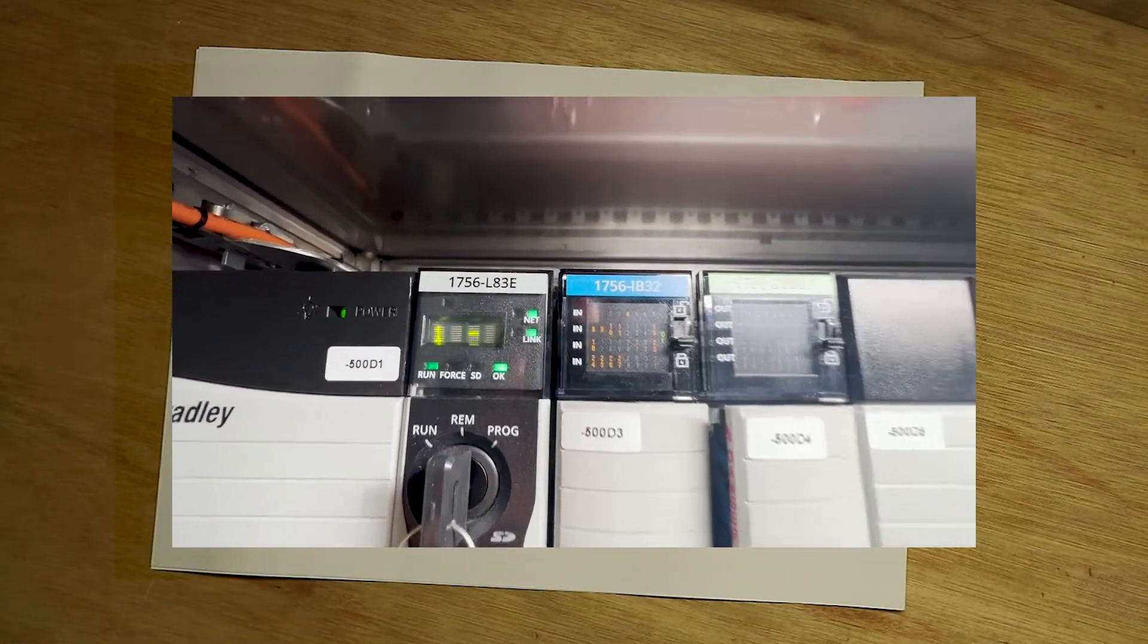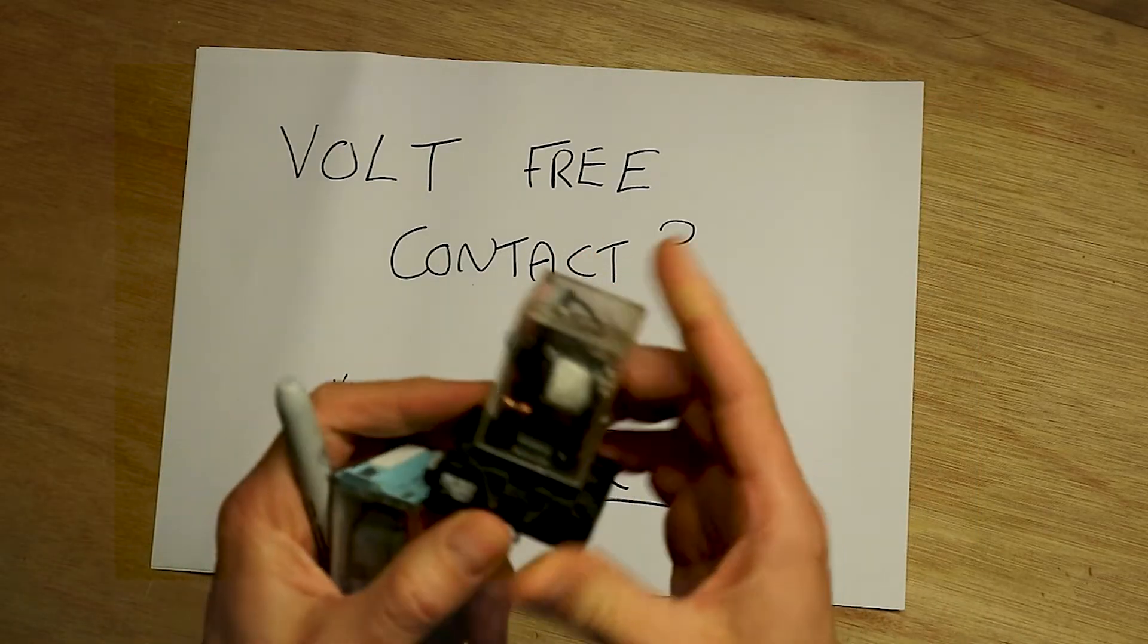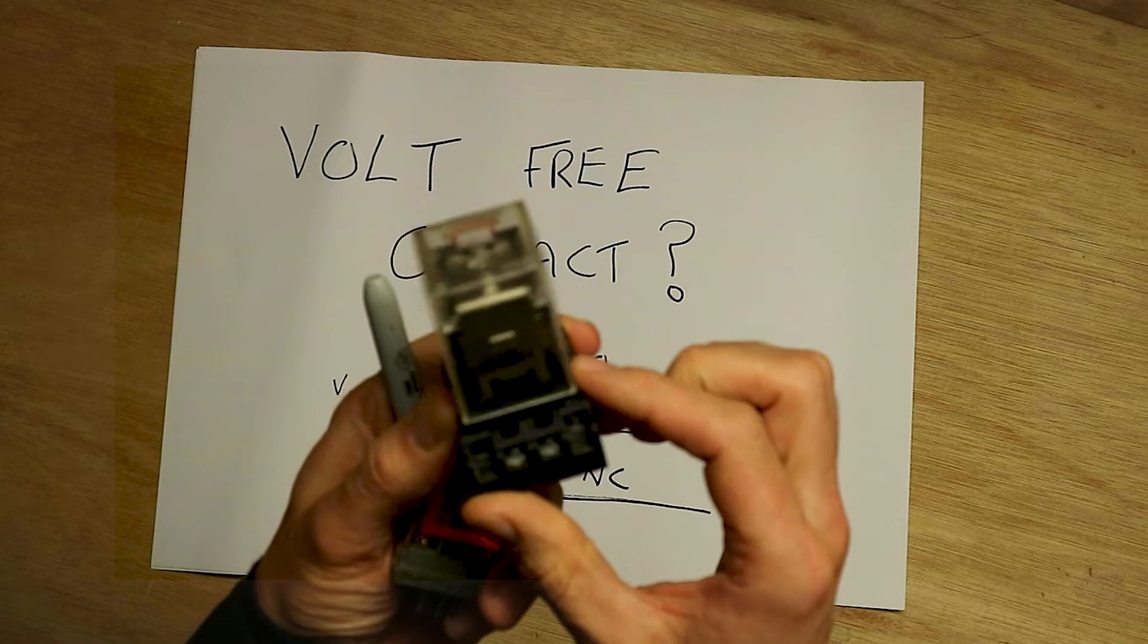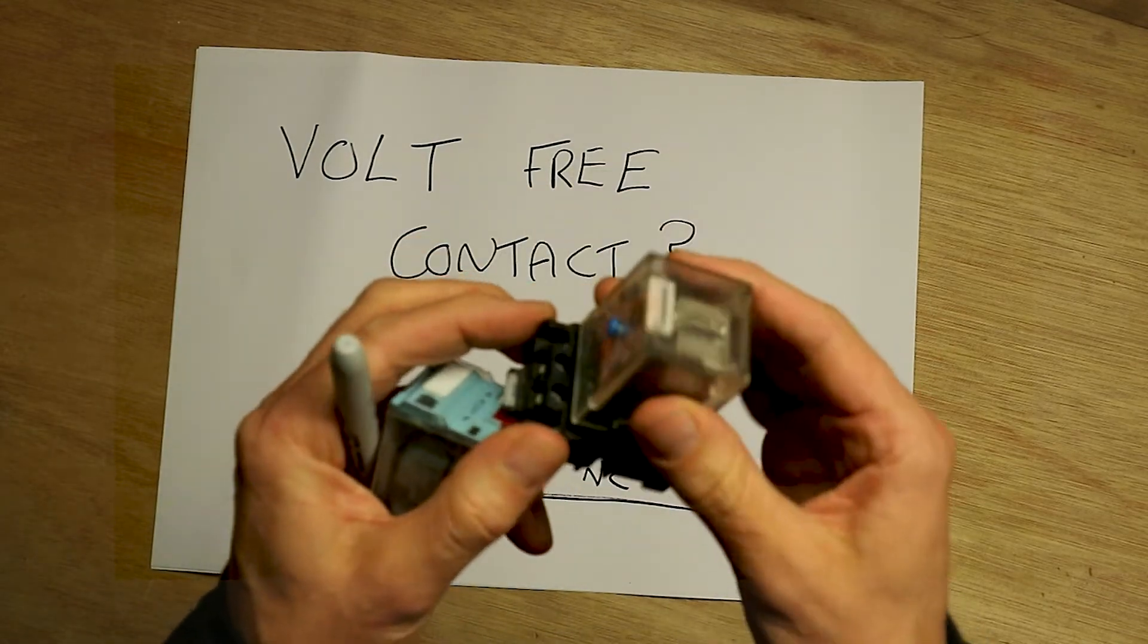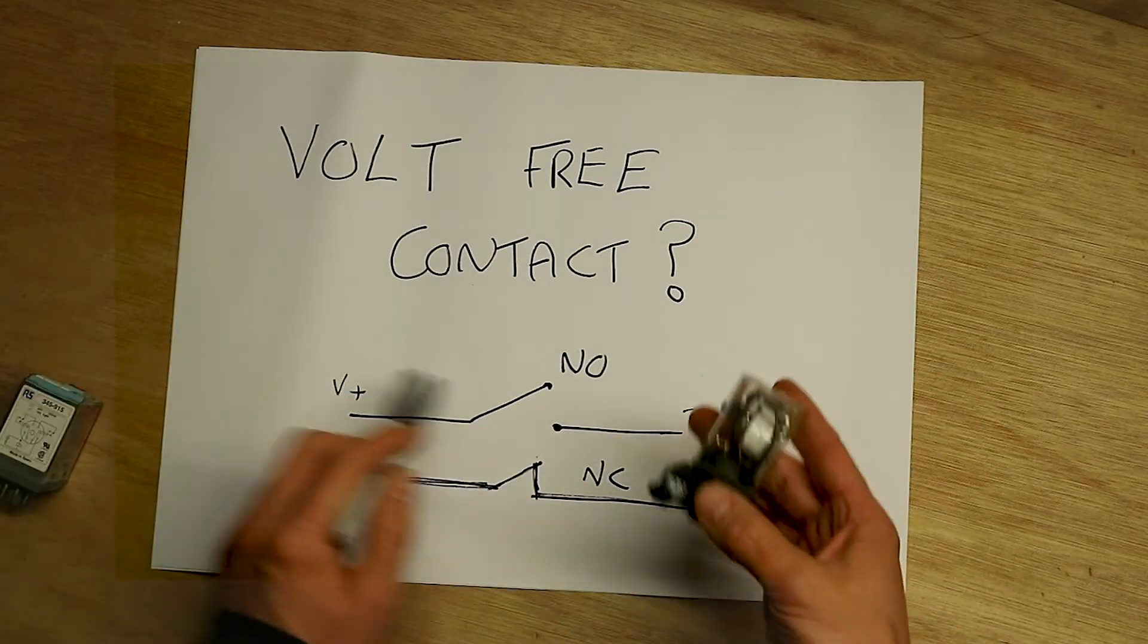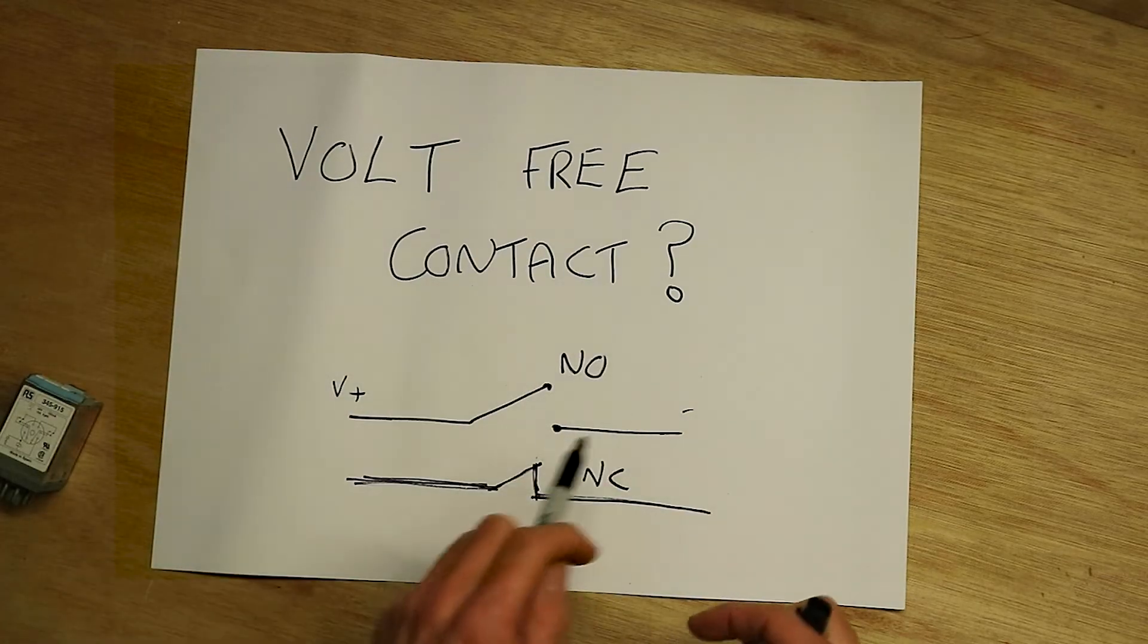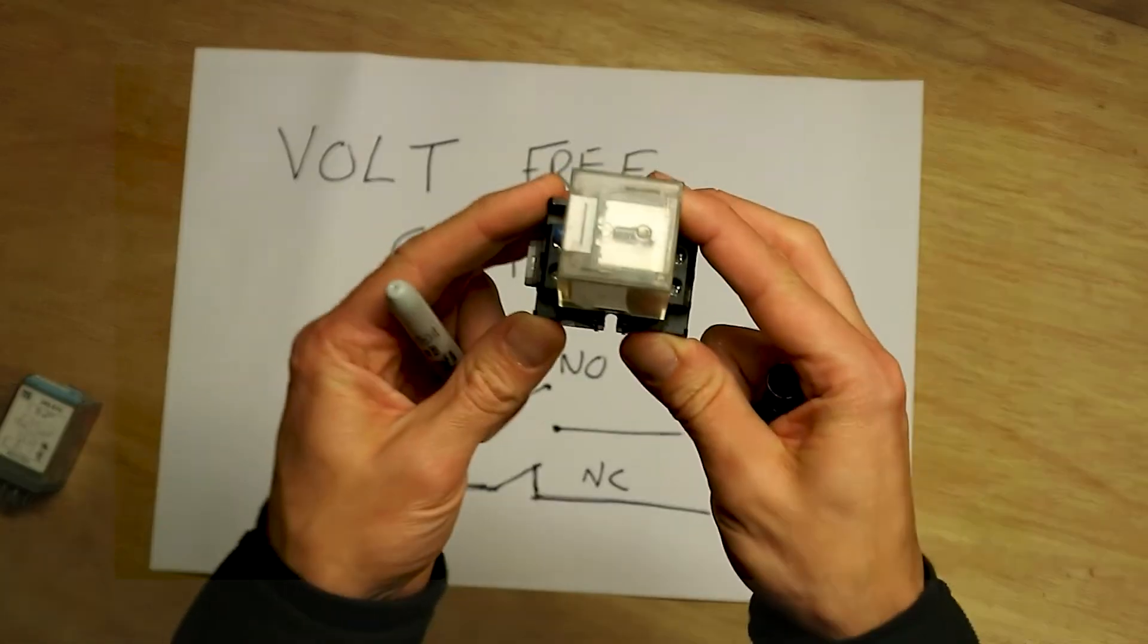That's basically as complicated and as simple as they are. You have your coil in your relay. When the coil is excited, depending on voltage - this is a 12-volt DC coil - 12 volts will pull the contacts in. You can then use one of these contacts. This could be completely separate to the machine that you're using.